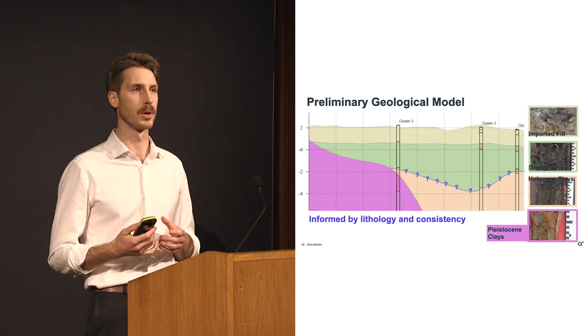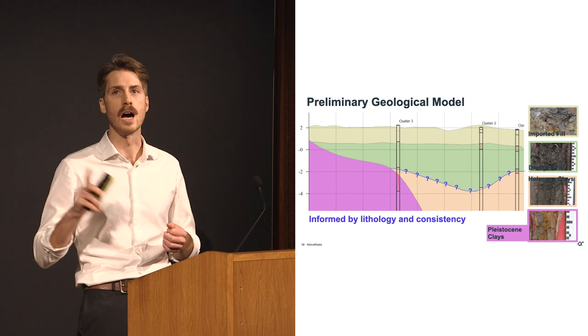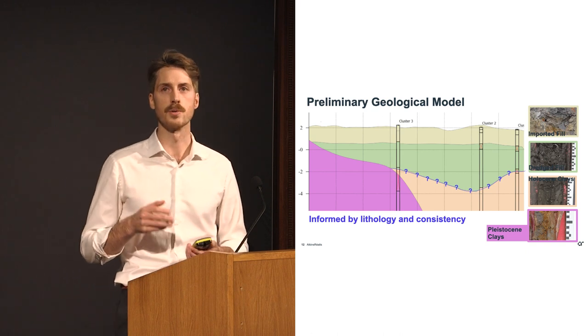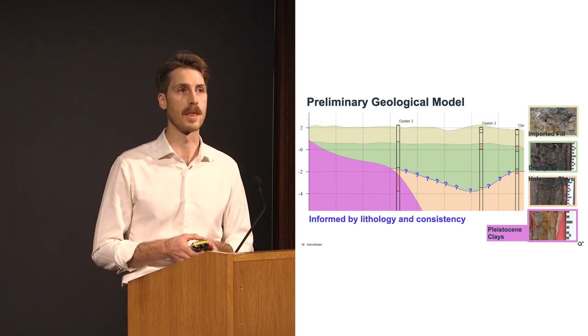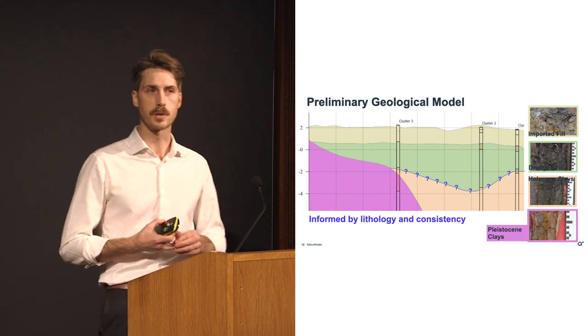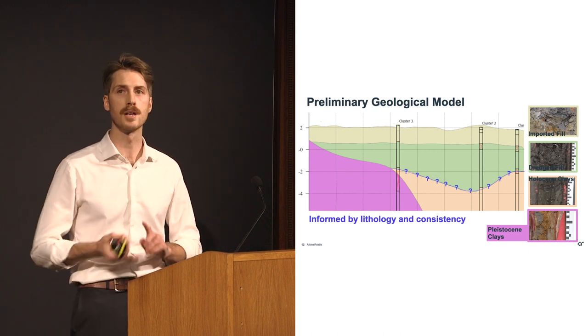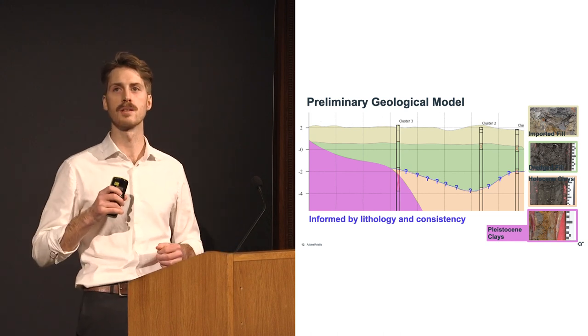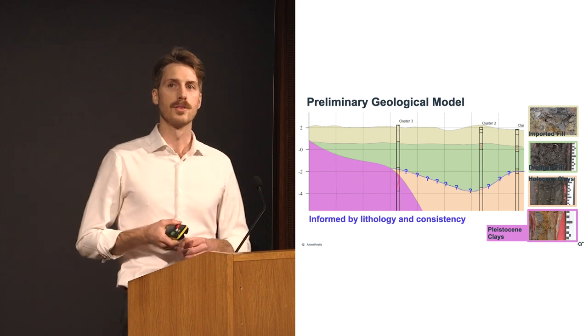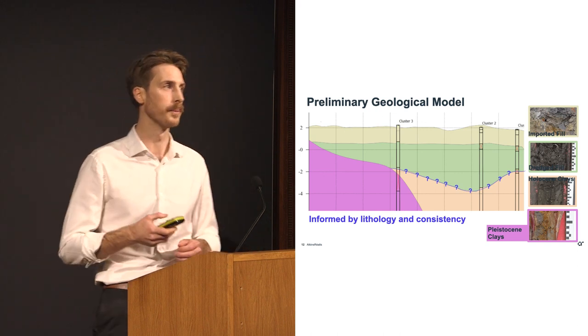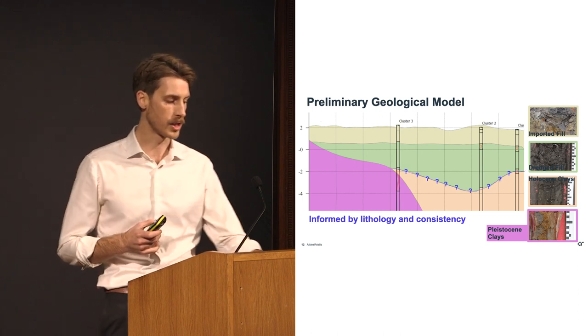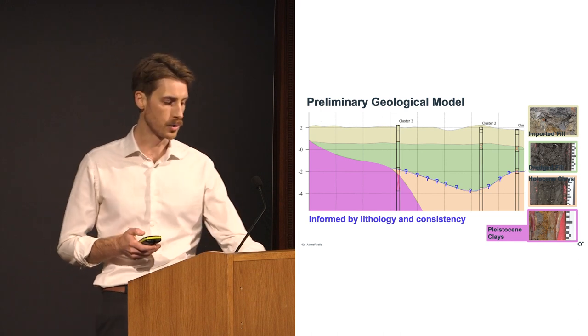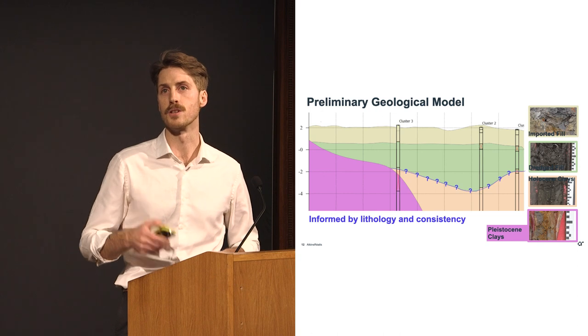Once we'd completed our ground investigation, the next step was to build our geological model. Our preliminary model was a draw a line between the contacts in the boreholes exercise. We didn't have a lot of insight to the in-situ testing, so we focused on the results of the visual and tactile logging of those sonic boreholes, because we had the most confidence in that information. It was comprised of four units, as you can see on the right-hand side. Imported fill overlying dredged fill. Quite easy to tell these apart. Clear change in lithology, clear change in consistency. Same with Holocene clay down to Pleistocene clays. Clear change in consistency, clear change in lithology. The problem comes in at the boundary between the dredged fill and the Holocene clay.